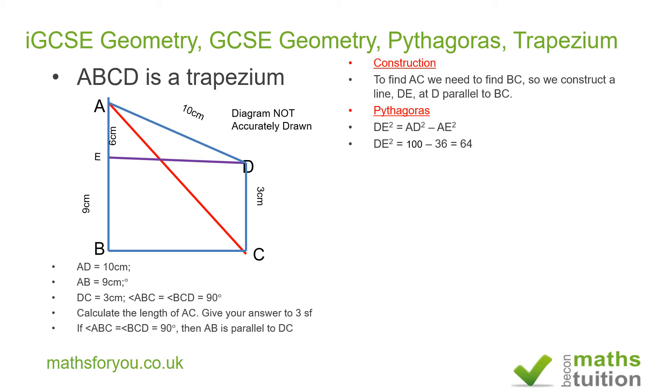100 minus 36 gives us 64. If we then take the square root of both sides, the square root of DE² is DE and the square root of 64 is 8. So DE is 8, which also means that BC is 8 centimeters.